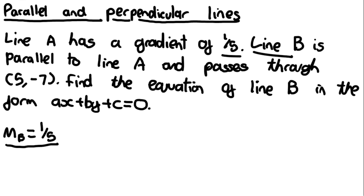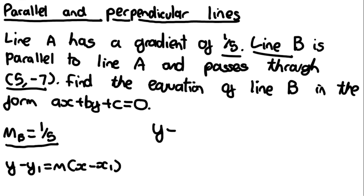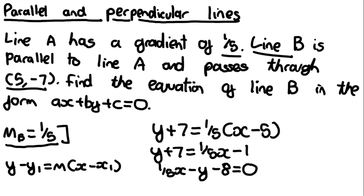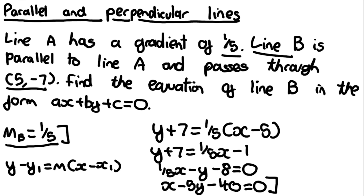Knowing a point on line B — that it passes through (5, -7) — we can use the formula y minus y1 equals m(x minus x1). Plugging in the values: y plus 7 equals 1/5 times (x minus 5), which expands to y plus 7 equals 1/5 x minus 1. Rearranging gives 1/5 x minus y minus 8 equals 0. Multiplying everything by 5 to make all integers: x minus 5y minus 40 equals 0. This is a valid equation of line B in the form Ax plus By plus C equals 0.